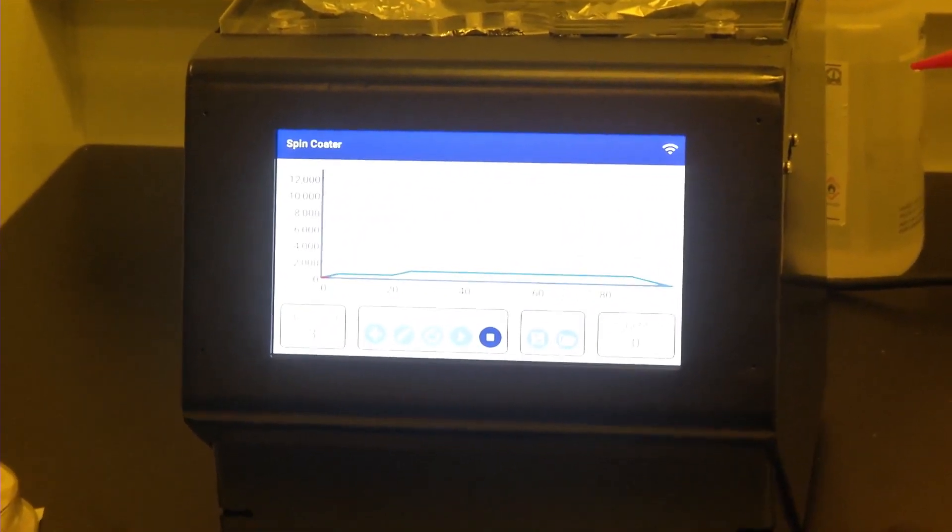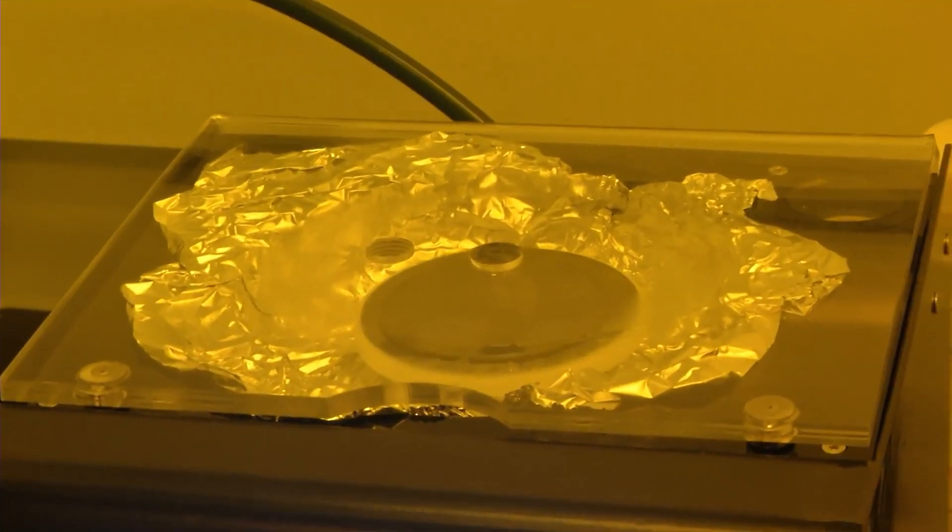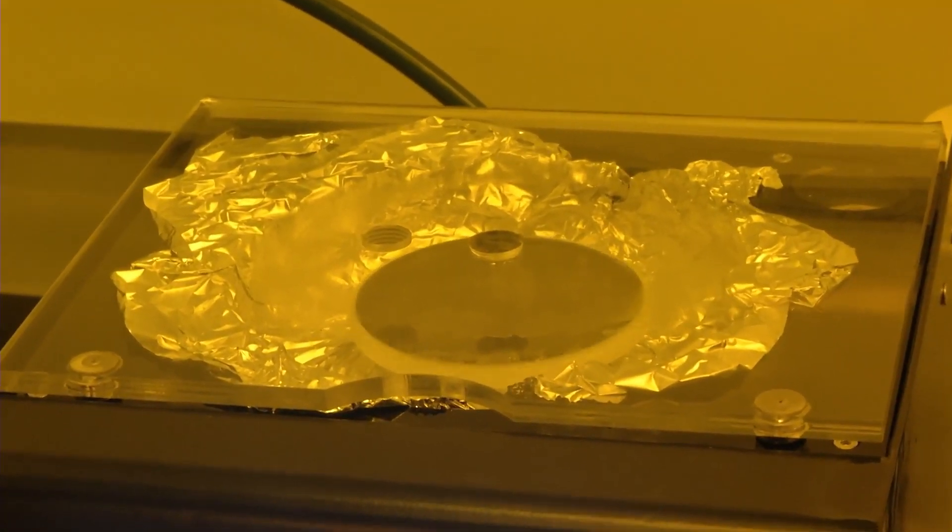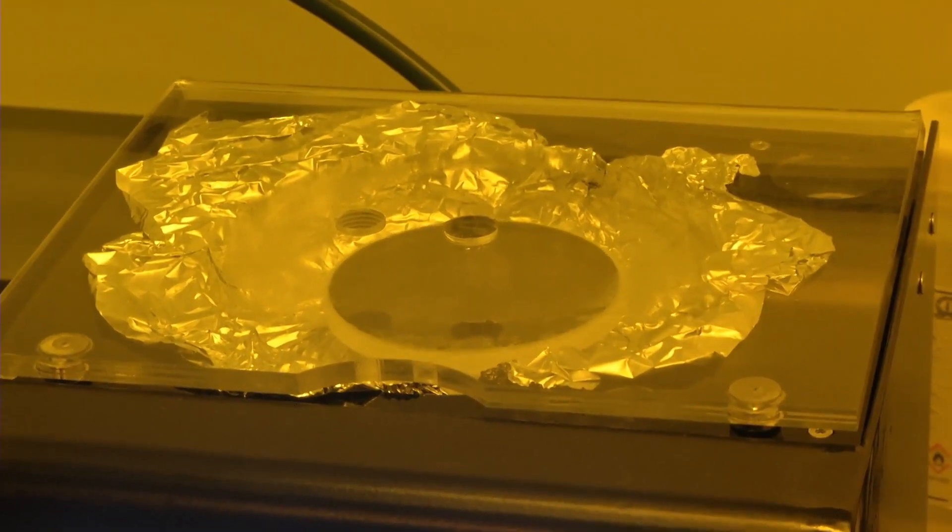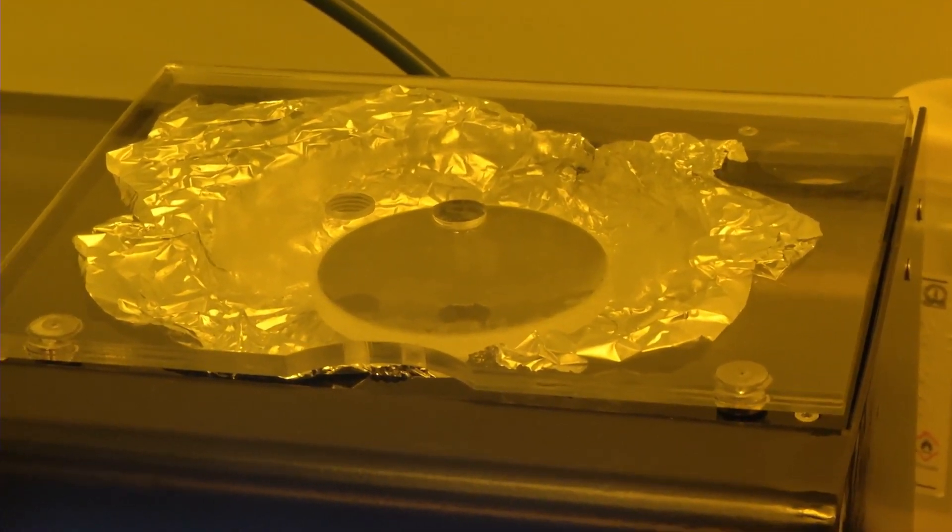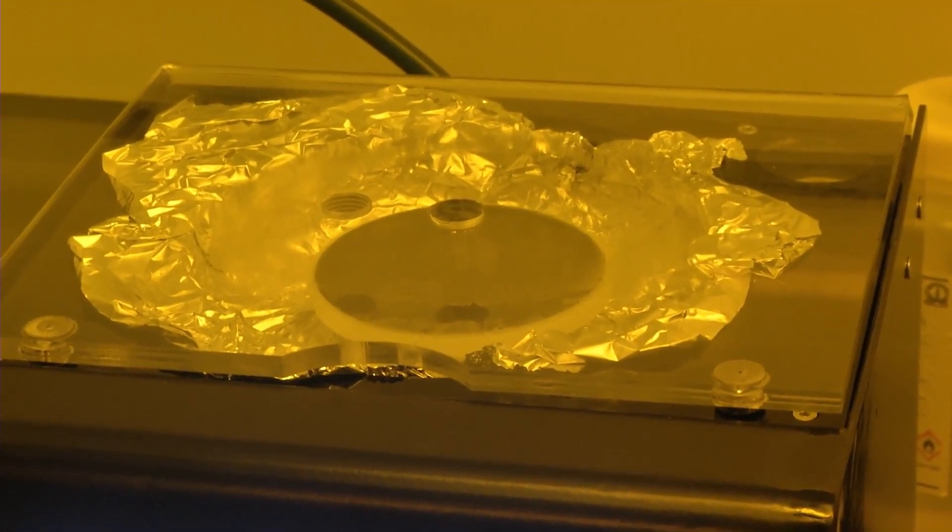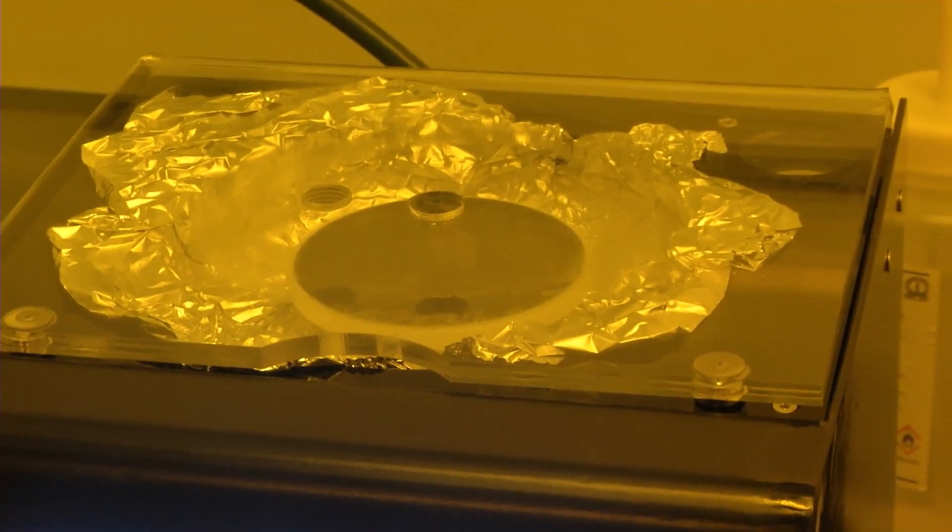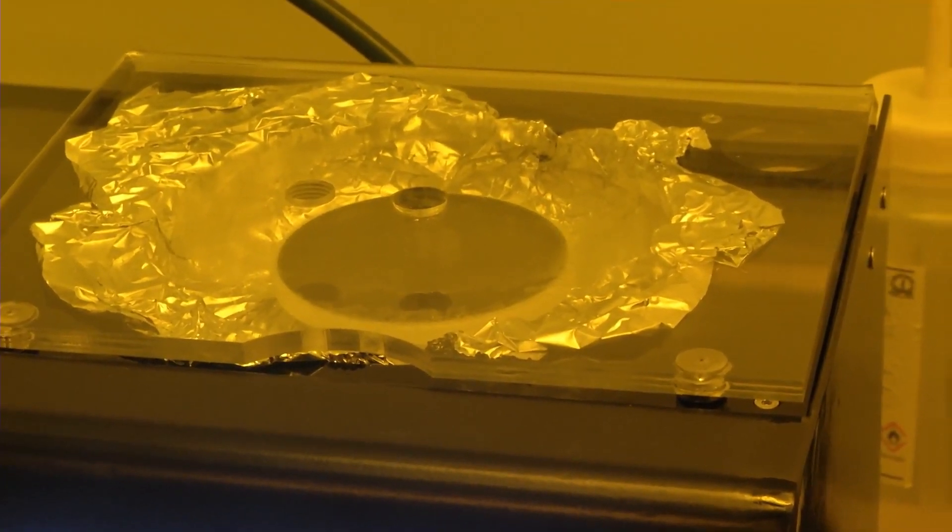The spin coating process has started and the wafer has started rotating. This is the first step where the polymer precursor is spreading. Once this step is over, the next step will increase by ramping up to the speed where it can thin down while also evaporating some of the solvent.